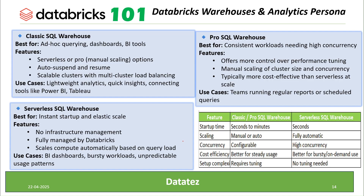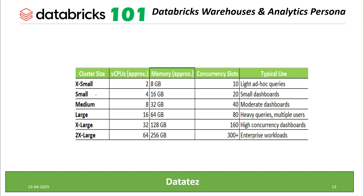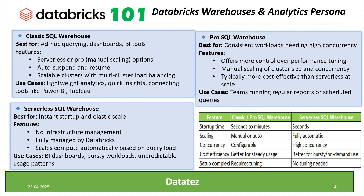Today we learned about different types of warehouses. Here is a quick summary of the different cluster sizes and the power that comes with each. For example, X-Small gives you 2 virtual CPU cores with 8 GB of memory, and can execute 10 parallel queries — that is the concurrent query slot. For very complex workloads, go for a larger size; for more users connecting to the cluster, increase the number of clusters.